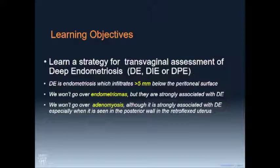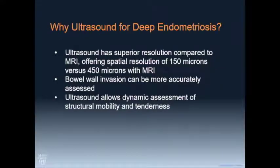Deep endometriosis is endometriosis that infiltrates more than five millimeters below the peritoneal surface. We won't go over endometriomas — I know you know what they look like. We're not going to go over adenomyosis. Hopefully you're learning what that looks like, but obviously during the scans we're looking for those things.